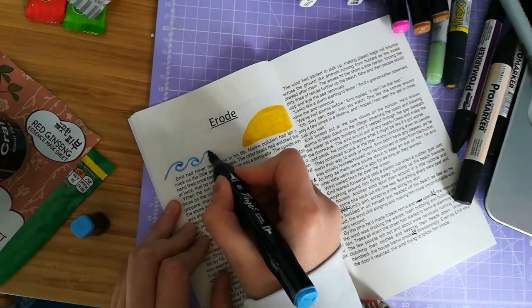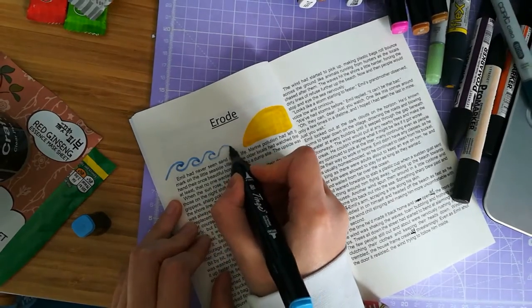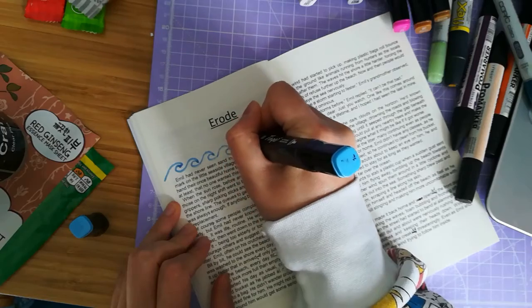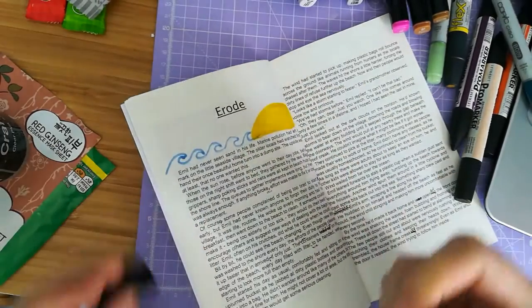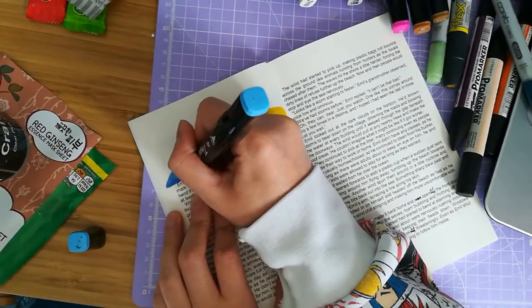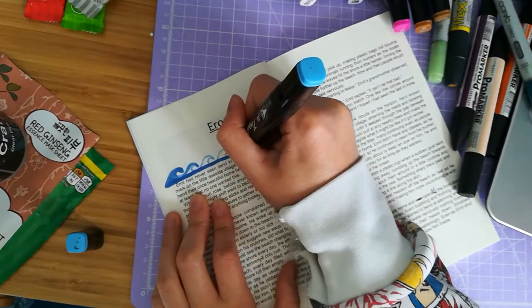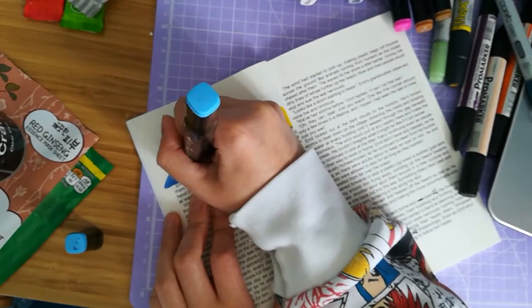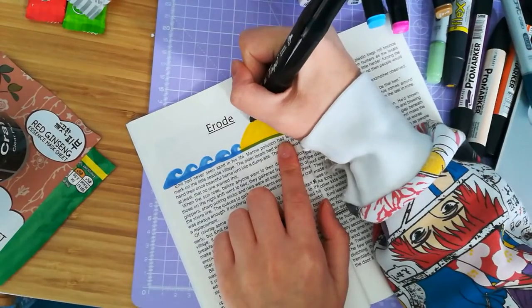Looks like a storm starting to fester, Emil's grandmother observed, a voice low and ominous. We've had storms before, Emil replied. It can't be that bad. Oh, they can, dear. Just you watch. One like this comes around only a few times in a lifetime, and I'd hoped I'd seen the last in mine. Just you wait.